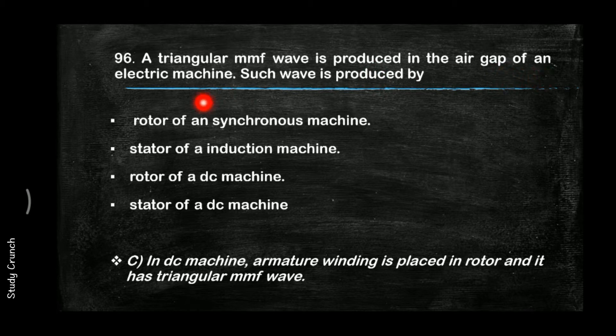A triangular MMF wave is produced in the air gap of an electrical machine. Such a wave is produced by the rotor of a DC machine, since the armature winding is placed in the rotor and it produces a triangular MMF wave.